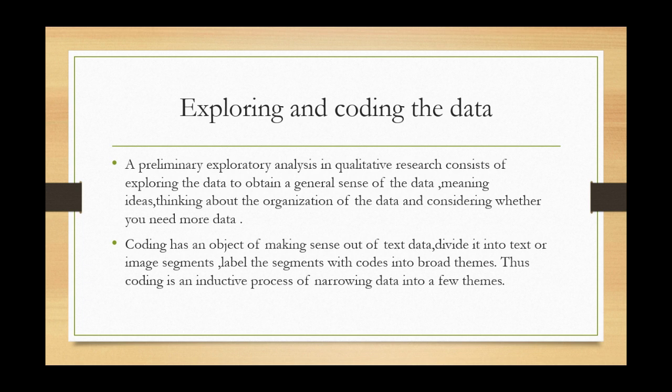After that, then you come and code the data. The object of the coding process is to make sense out of the text data. That means you divide that data into text or image segments, you label the segments with codes into broad themes. This is an inductive process of narrowing data into a few themes.